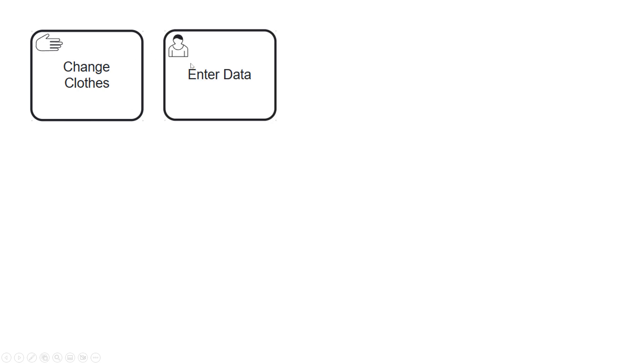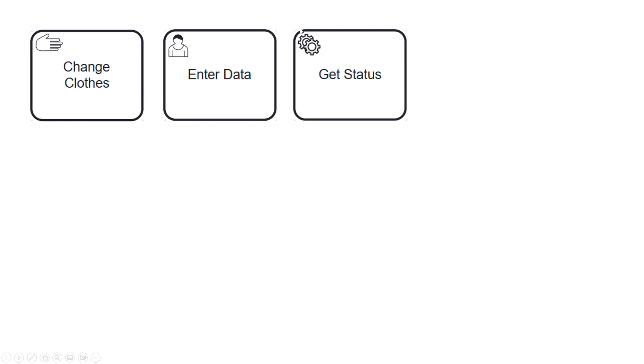Here are examples of how a BPMN activity or task can look. For instance, we have an activity 'change close.' In the top-left corner there is a symbol indicating the degree of automation. A hand symbol means no IT system is involved — it's totally manual. A user task with a user icon means it's still manual but using an IT system, like entering data in a form. An automated task symbol, like 'get status,' means a system makes an API call automatically.